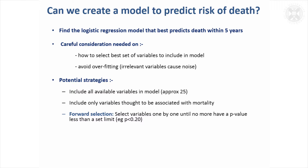An approach that gets used quite a lot is forward selection. In this, you select variables in order of their significance, one by one, until none of them have a p-value less than a set limit. That limit doesn't have to be 0.05 — it could be something like 0.2, depending on how sure you want to be that the measurement is contributing to the prediction.